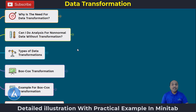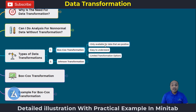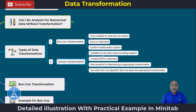So up to this point you should have complete clarity about what data transformation means. Now the next question: what are the different types of data transformation available and which is most suited for you? We are going to understand two types: one is Box-Cox transformation and the second is Johnson transformation. Box-Cox transformation is only available for data that are positive — we cannot use it for negative values. It is easy to understand but provides limited transformation options. Johnson transformation is available for any data values including negative, is more complicated to understand, but is very powerful for determining an appropriate transformation. Use Johnson transformation only when the Box-Cox algorithm does not determine an appropriate transformation.